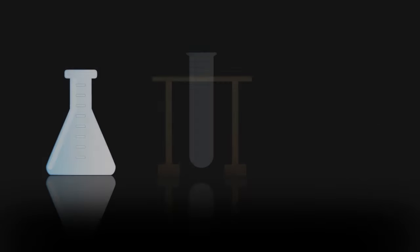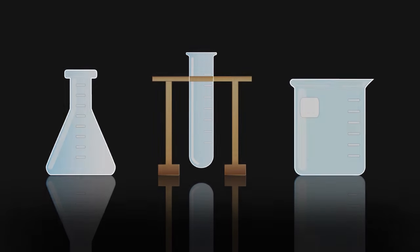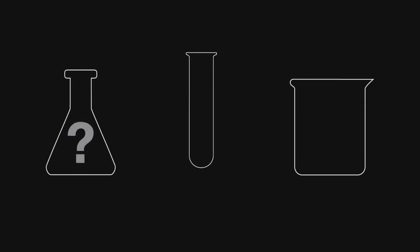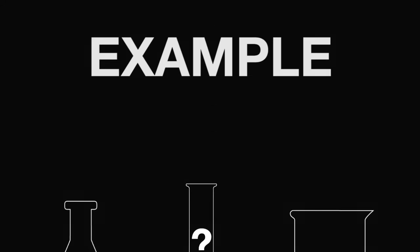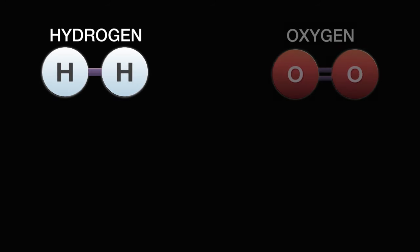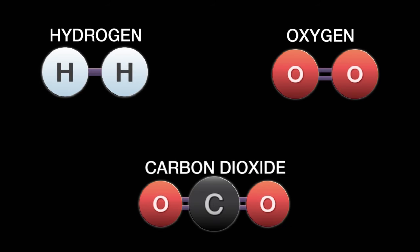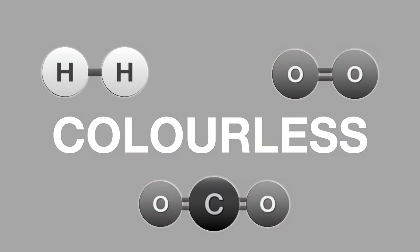We test for gases in the laboratory because it is nearly impossible to determine the identity of a gas just by its appearance. As an example, hydrogen, oxygen, and carbon dioxide are all colorless and odorless. How would we be able to determine which is which?